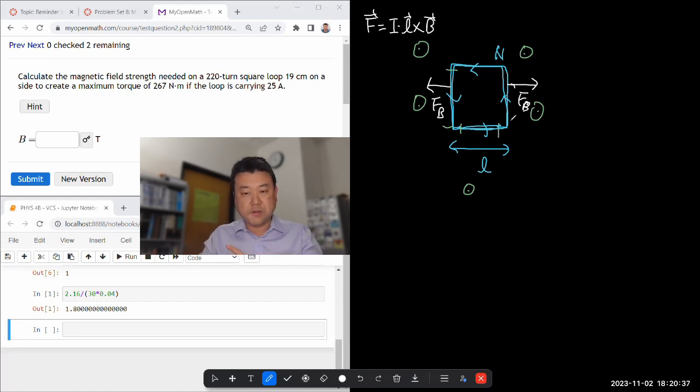The lower segment, again, the finger in the direction of L to the right and oriented so that I can curl my fingers in the direction of magnetic field out of the screen. My thumb points down.